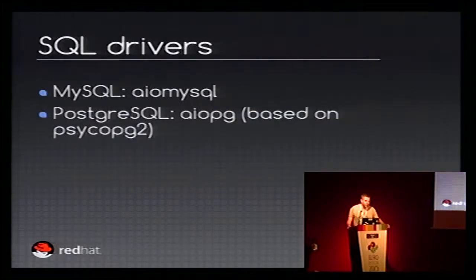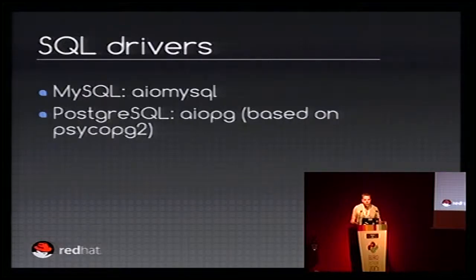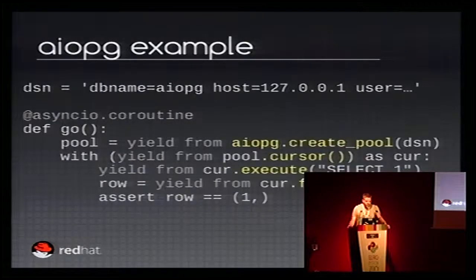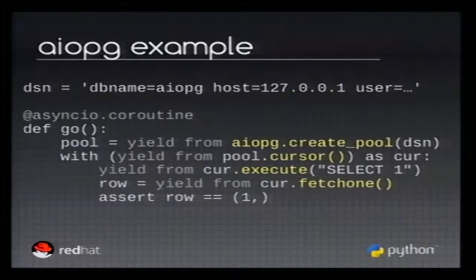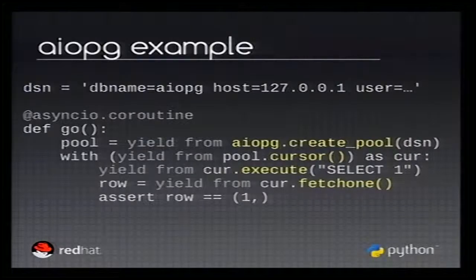For databases, for SQL, you have a client for MySQL called aiomysql. For Postgres, you have the aiopg driver, which is based on psycopg2 — so it's not completely new, it's just a wrapper to have an API compatible with AsyncIO on top of psycopg2. The API is not new; it's just the Python DB API adapted to AsyncIO. This example creates a pool of connections, which is more efficient because you can send more requests at the same time, but you can also create a single connection if you prefer.